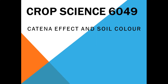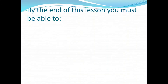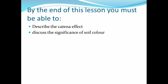Hello students and welcome to CropScience 6049. Today we are going to look at the catena effect and soil color. By the end of this lesson you must be able to describe the catena effect and discuss the significance of soil color in crop production.